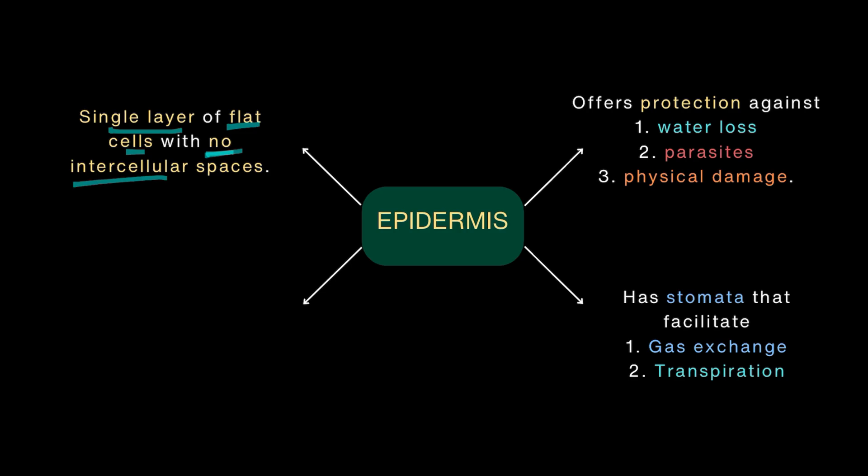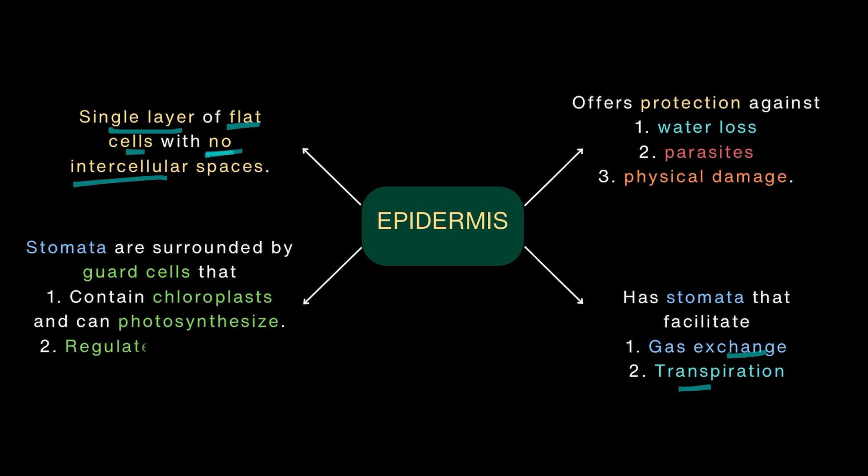It has stomata that helps take in carbon dioxide and release oxygen and it also participates in transpiration by letting water out in the form of water vapor. And the stomata are surrounded by kidney-shaped guard cells which are green in color. They participate in photosynthesis and these guard cells regulate the opening and closing of the stomata.